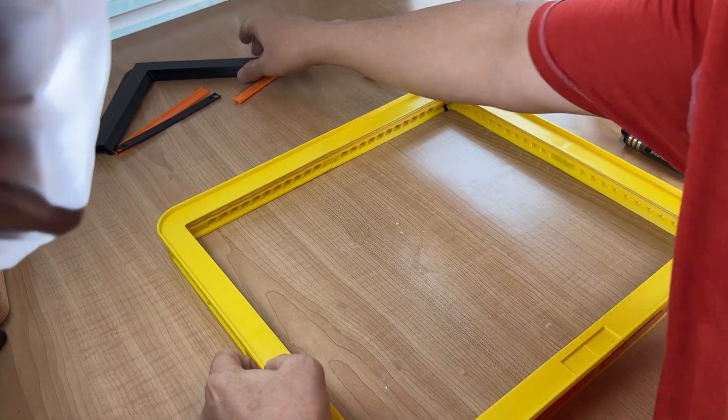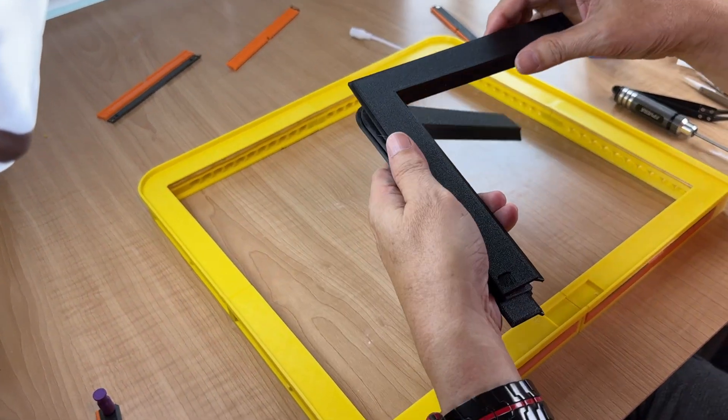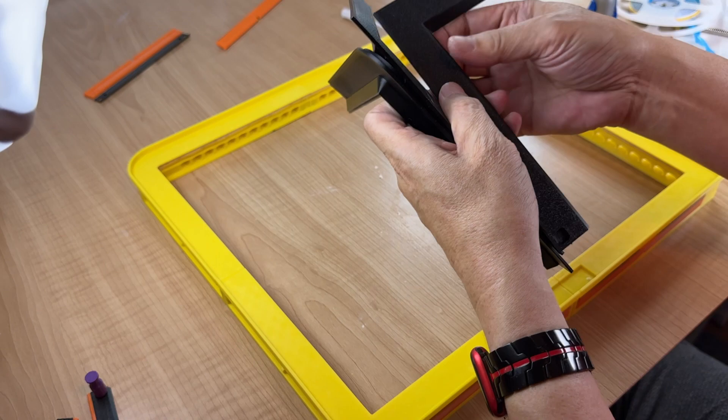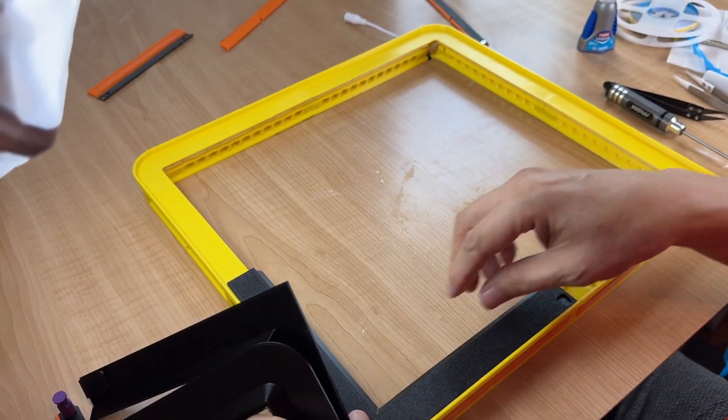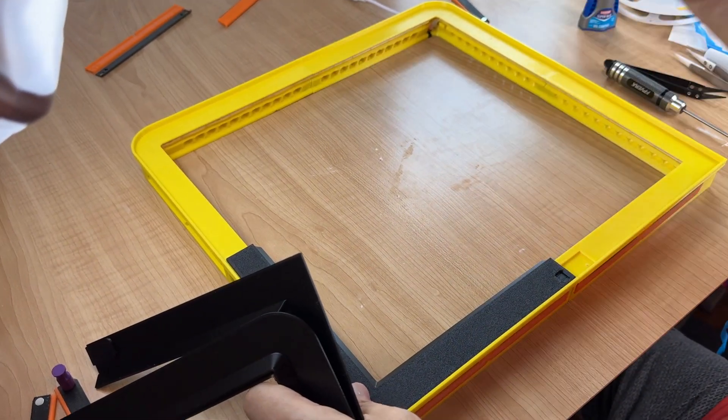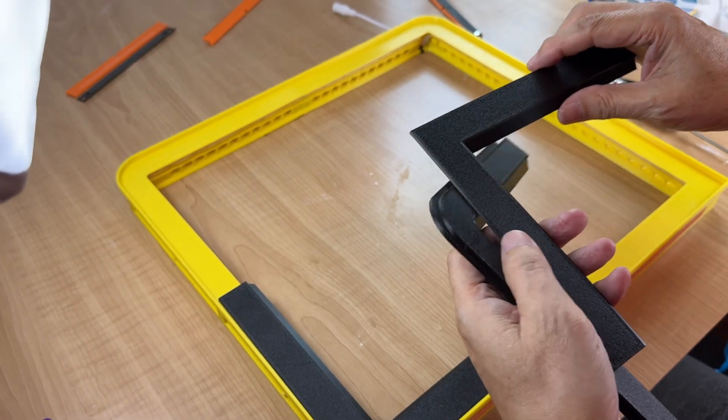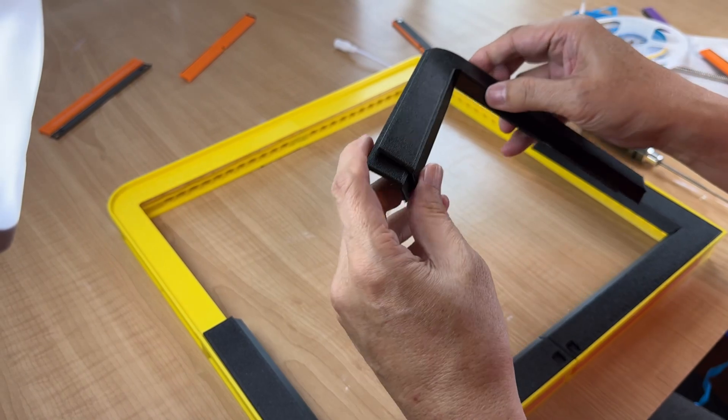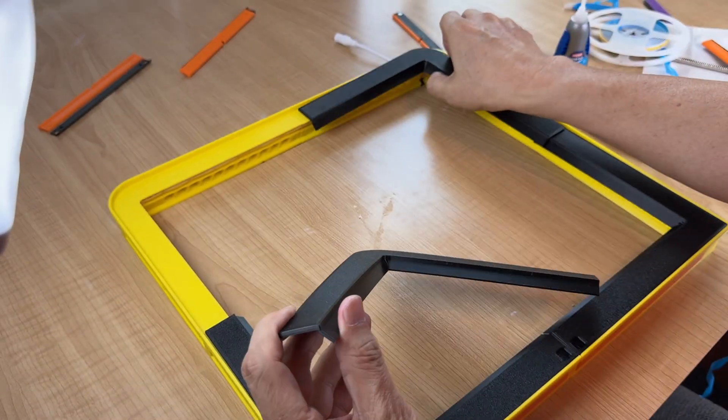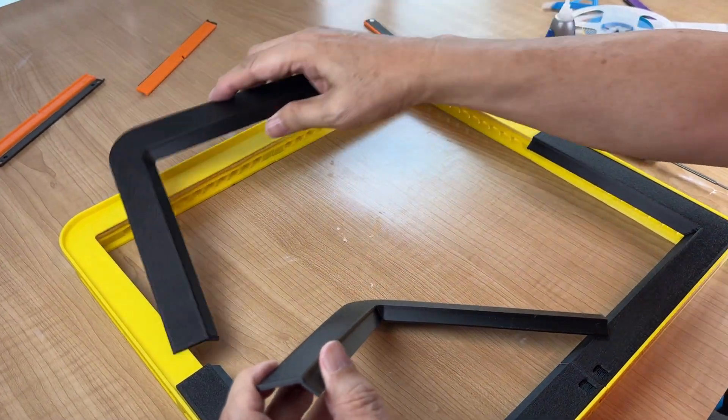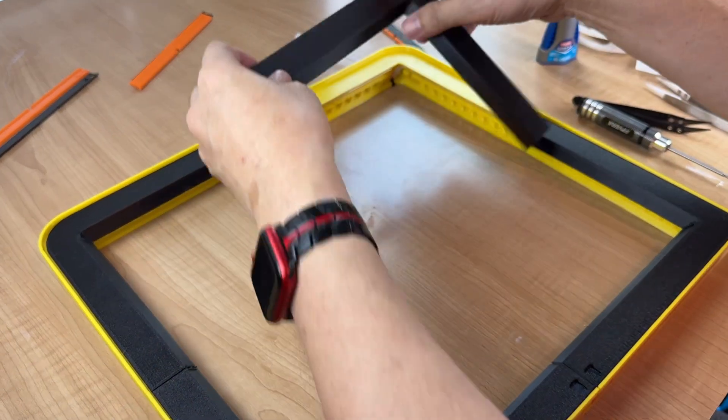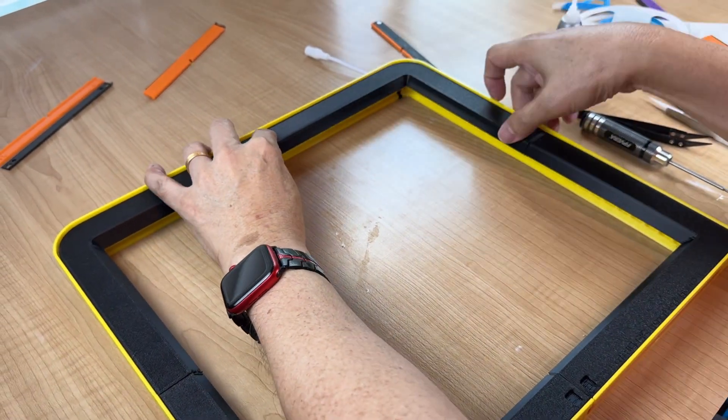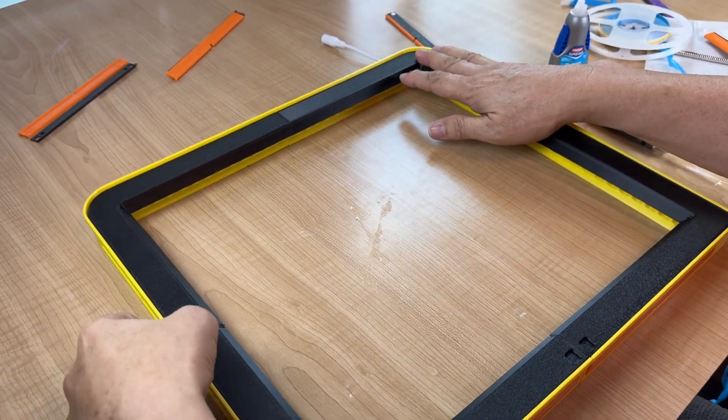And then last part is to install the shield. This is, I like it because this will shield the light from leaking outside to the top. And this is ready to go.